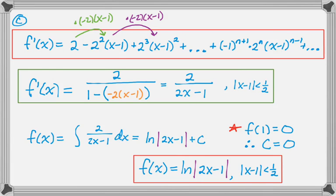That completes the entire problem. Solving for c was probably the trickiest part. A key tip: always write out the individual terms of a series rather than staying in summation notation — it makes term-by-term differentiation and integration much more straightforward. I hope you found this helpful, and good luck.